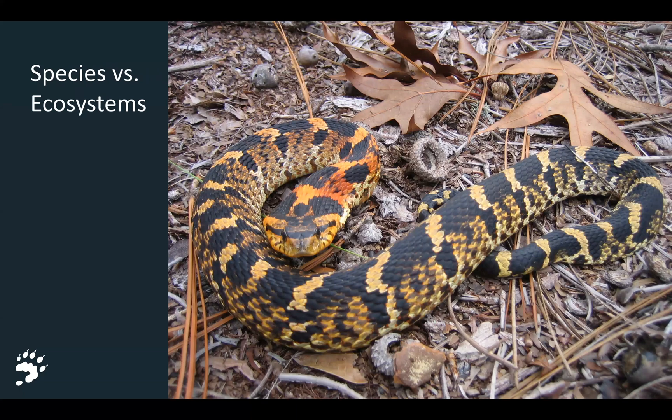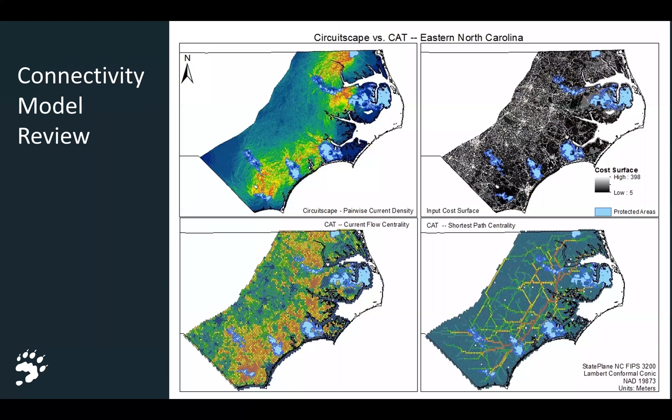It's also worth pointing out that many connectivity modeling approaches can be run for a specific set of species — deriving nodes and resistance layers for each one — or applied as a non-species-specific general model of connectivity from the ecosystem perspective. Now I'll run through a quick review of some of the more common connectivity modeling tools and approaches to give you an idea of what the inputs and outputs look like.